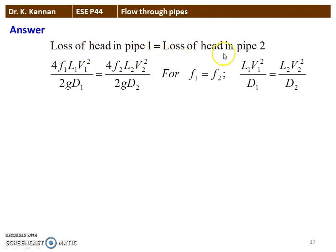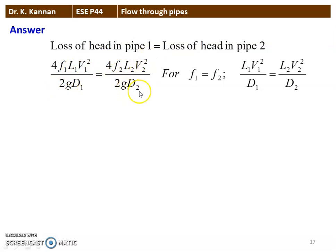For pipes connected in parallel with equal length, the losses in the pipes are equal. So, head loss in pipe 1 equals head loss in pipe 2: 4F₁L₁V₁²/2GD₁ = 4F₂L₂V₂²/2GD₂. Since the friction factor is constant for both pipes, F₁ = F₂. Simplifying the equation: L₁V₁²/D₁ = L₂V₂²/D₂.